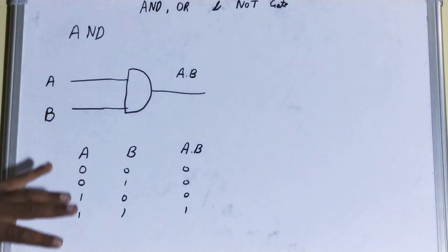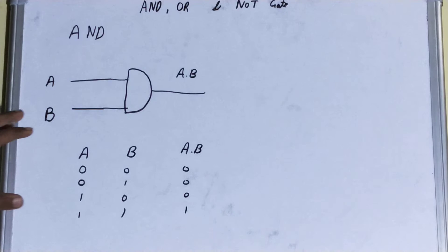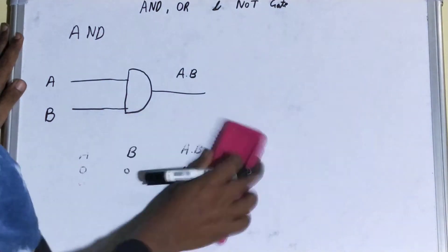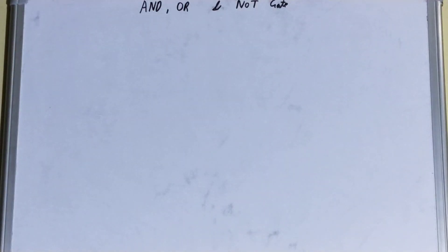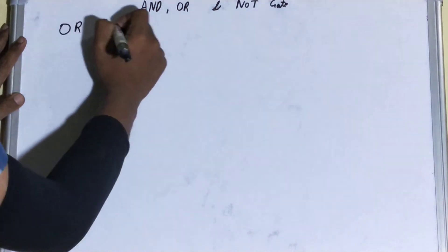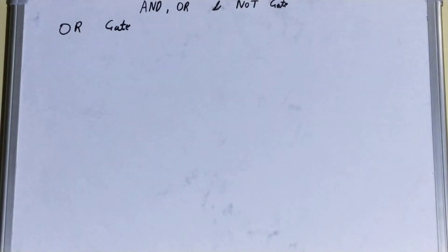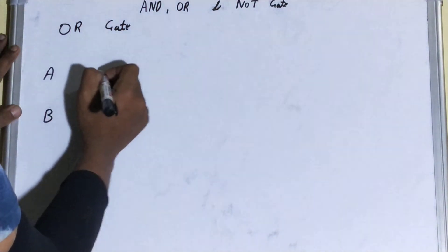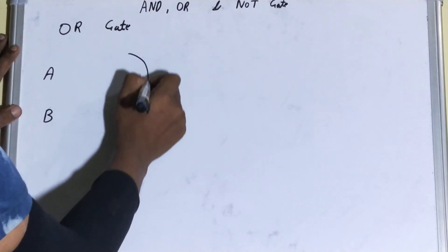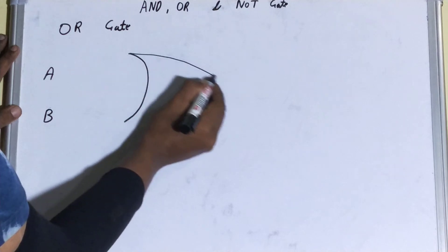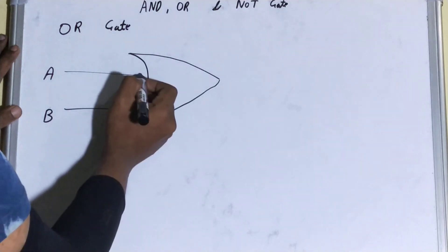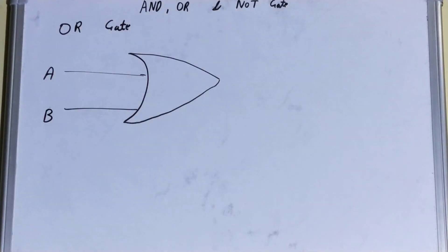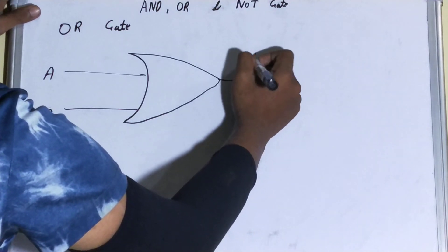Now let's see the OR gate. If you haven't copied the AND gate notes, pause the video and copy them down. For the OR gate, if we have two inputs A and B, the OR gate is drawn like this — a curve with lines stretching from it and joining at a head. You can pass multiple inputs, and your output will be A plus B.